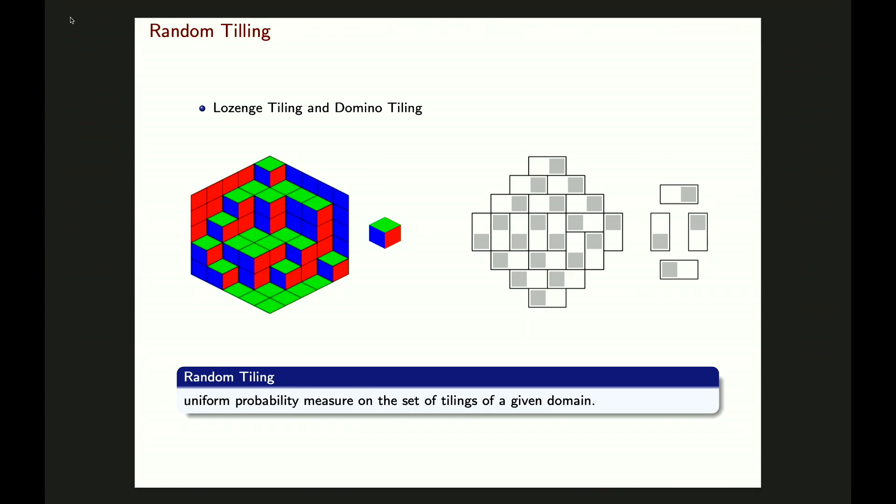For these tiling models, like this picture on the left, it's a lozenge tiling. Given the domain, you tile it with three types of lozenges: the green one, the blue one, and the red one. On the right, it's the domino tiling — you tile the whole domain with either horizontal or vertical dominoes. For this talk, I will focus on lozenge tilings. There are many ways to think about those lozenge tilings.